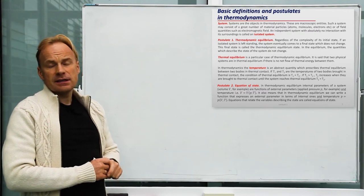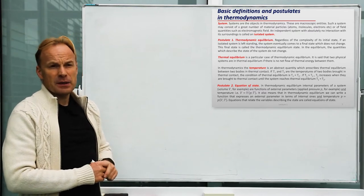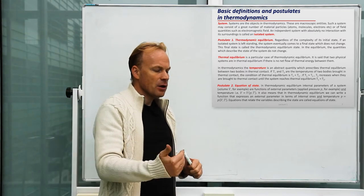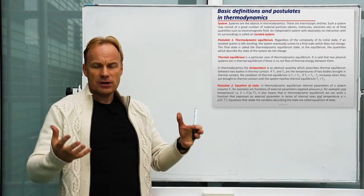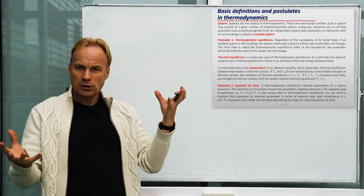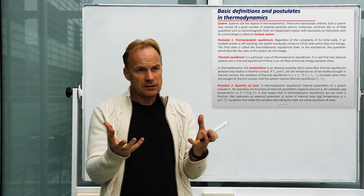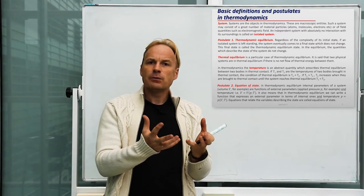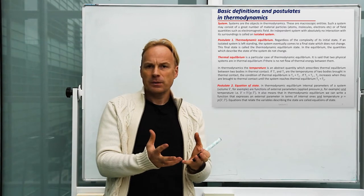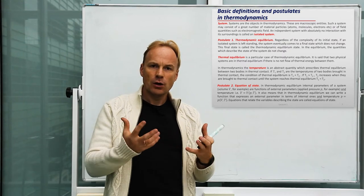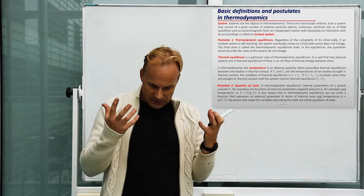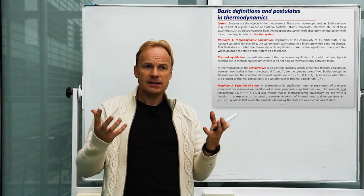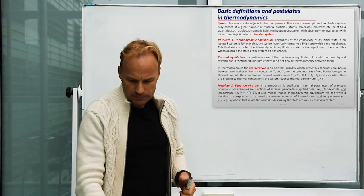Thermal equilibrium is a particular example of thermodynamic equilibrium and is applicable to the case when you are talking about heat transfer. If you have two bodies — a hot body and a cold body — you bring them together. There will be heat flow between them and it will stop at a certain moment. When it stops, we call the situation thermal equilibrium; we say that these two bodies are in thermal equilibrium.